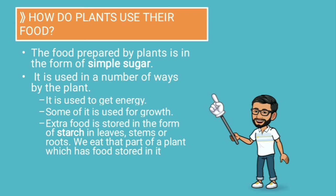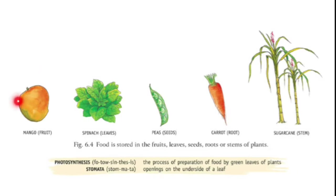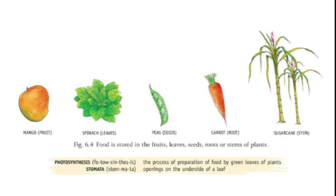The extra food is stored in leaves, stems, or roots. We eat that part of a plant which has food stored in it. Examples of parts of the plant where plants store their food include fruits, leaves, seeds, roots, and stems. Plants can store their food in any part.